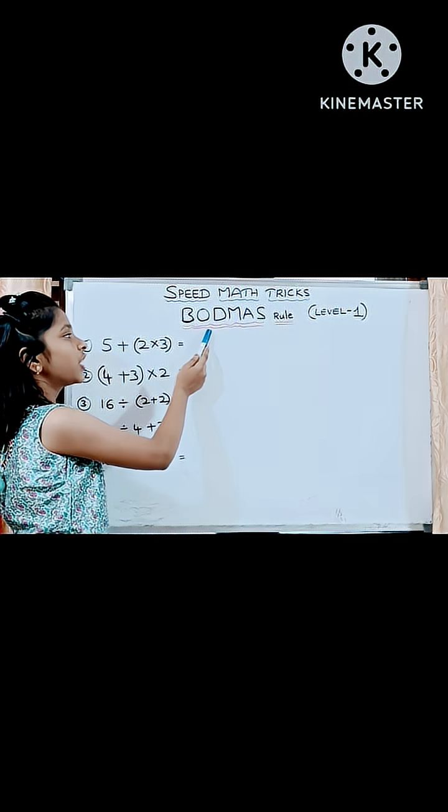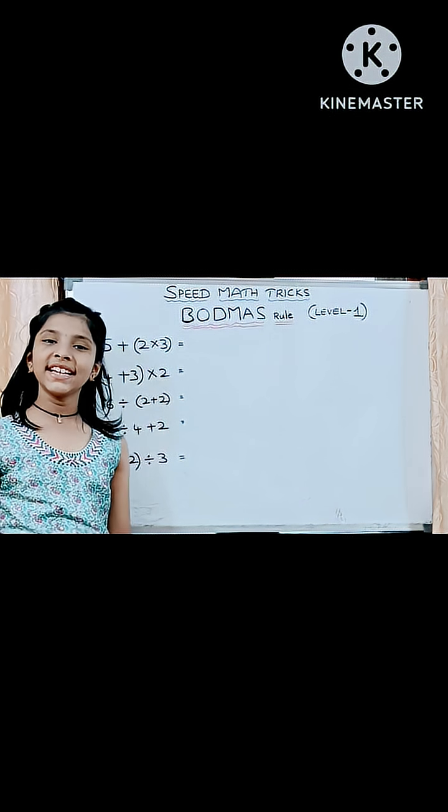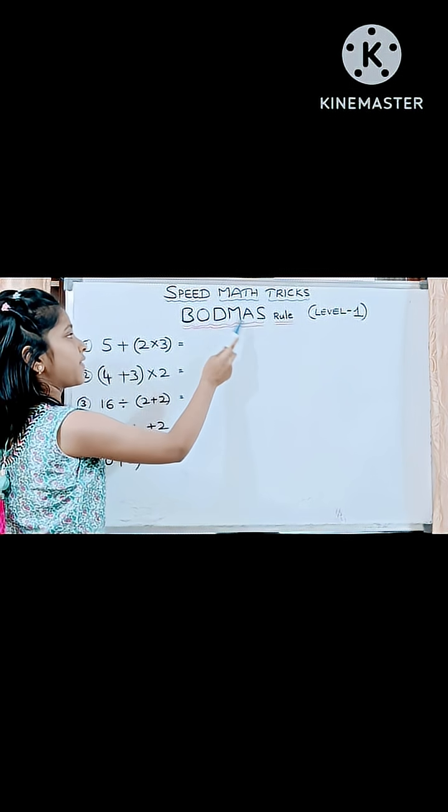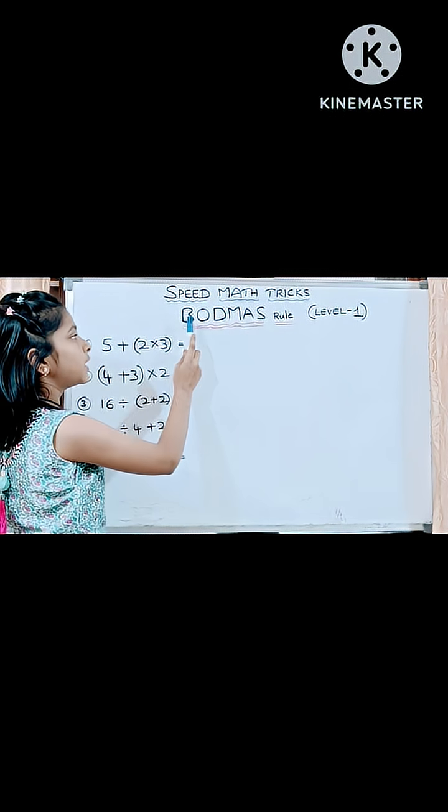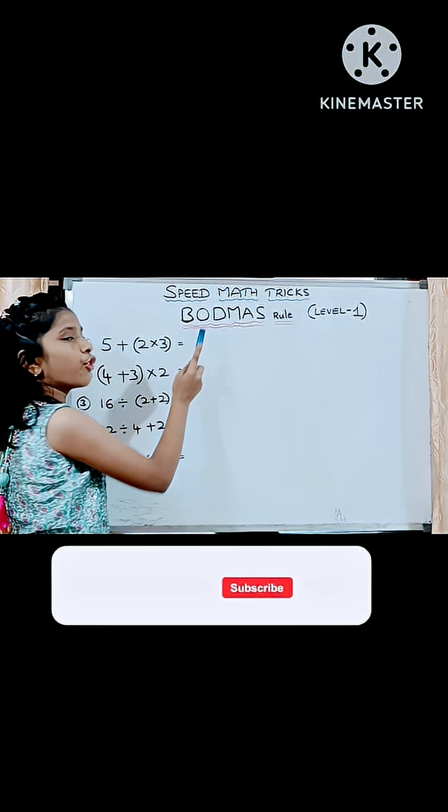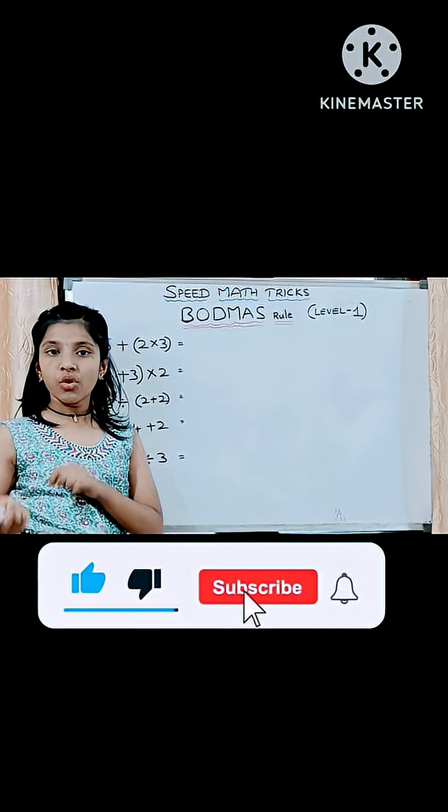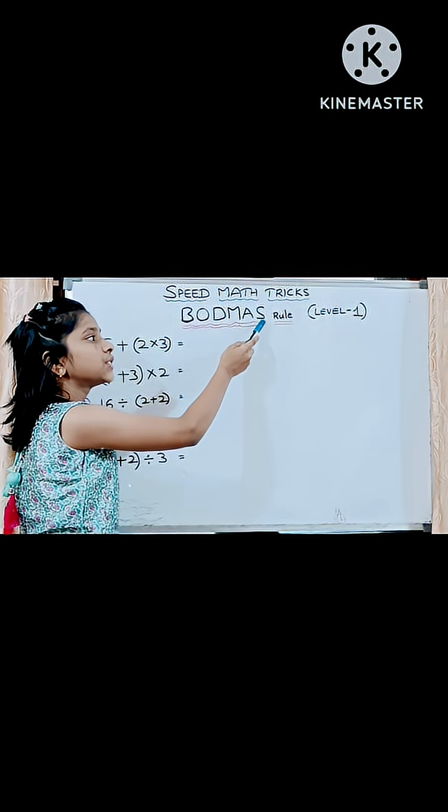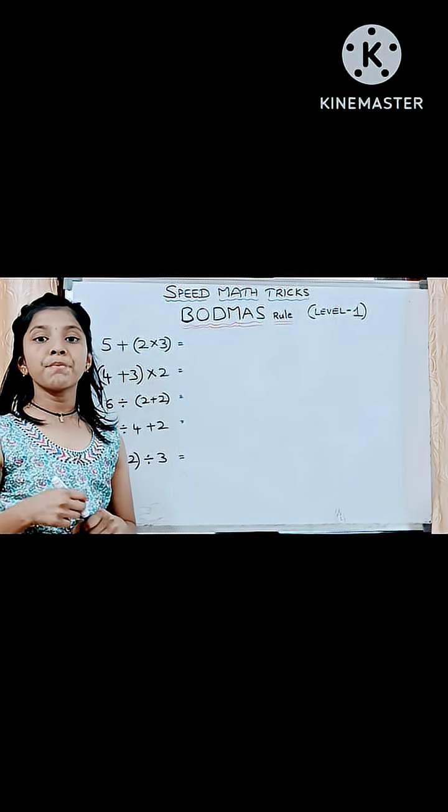Ishan, we can solve these sums according to BODMAS rule very easily. The rule is BODMAS. BODMAS means B for brackets, O for orders means powers or square roots, D for division, M for multiplication, A for addition, S for subtraction. This is the rule of BODMAS.